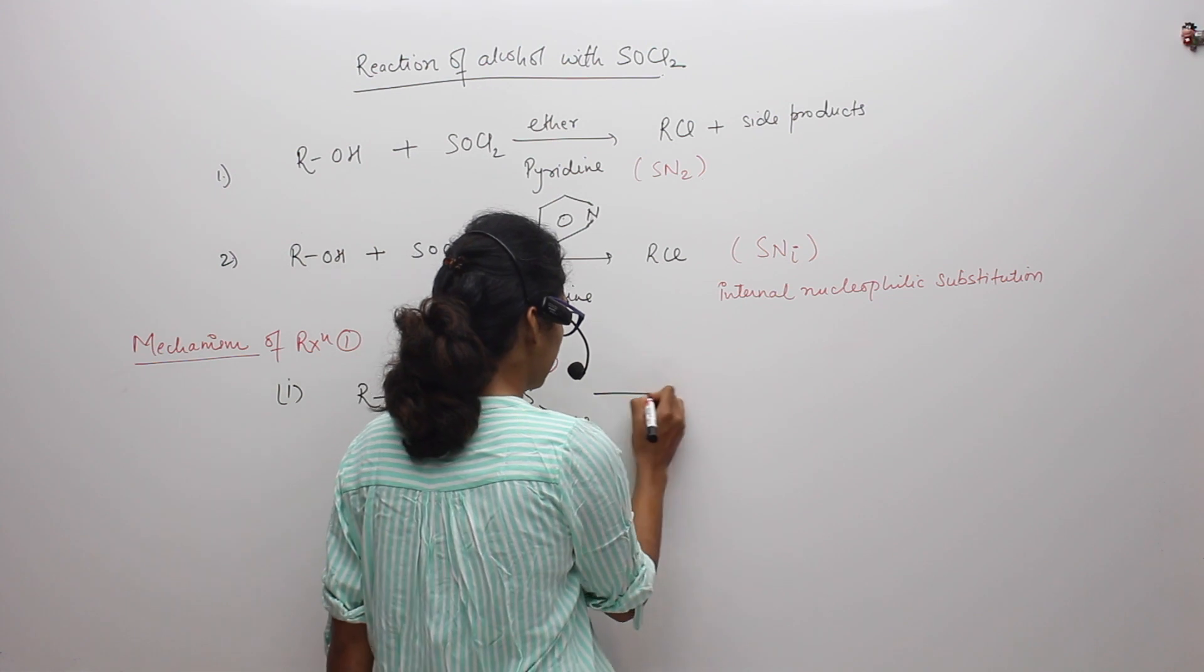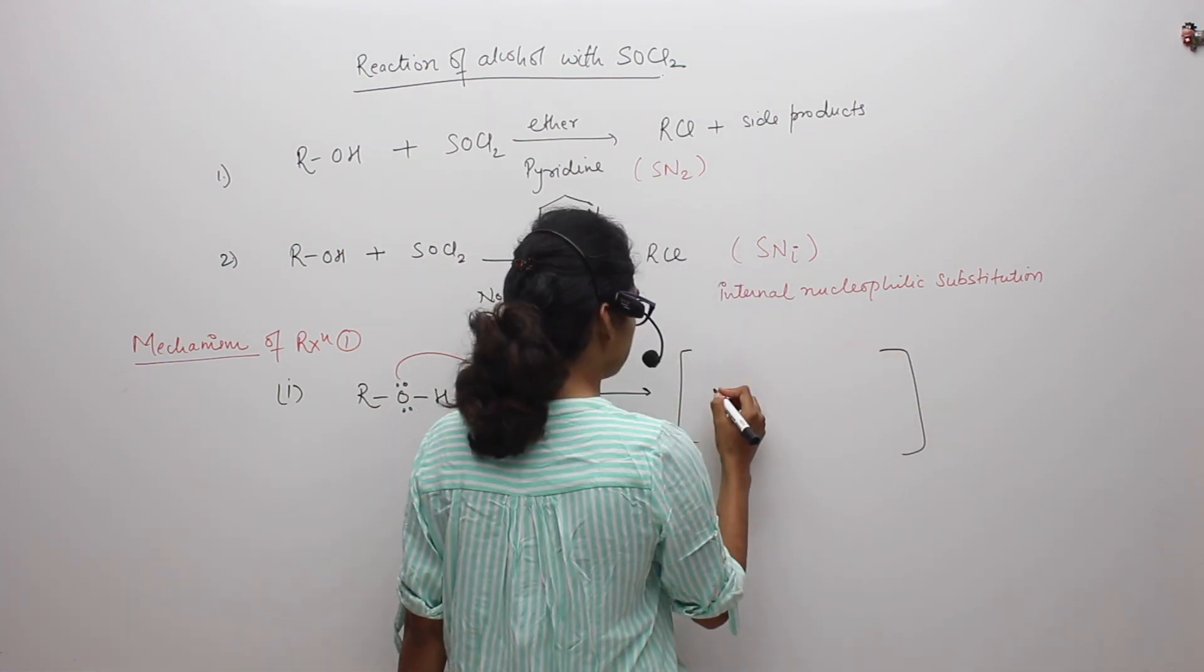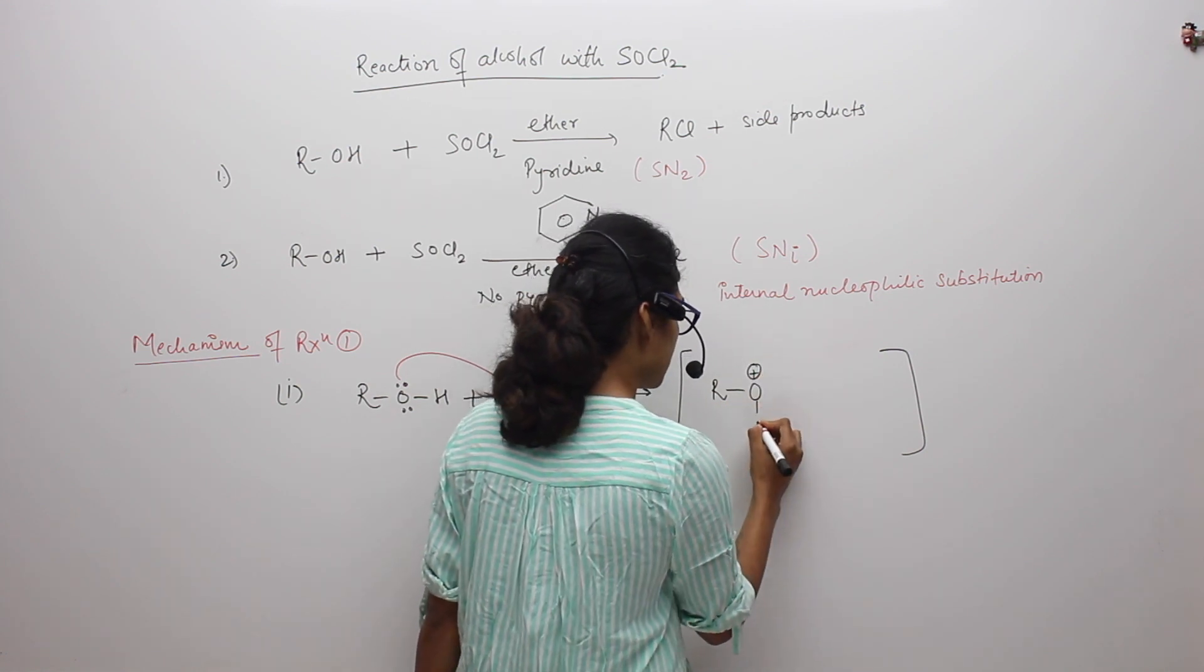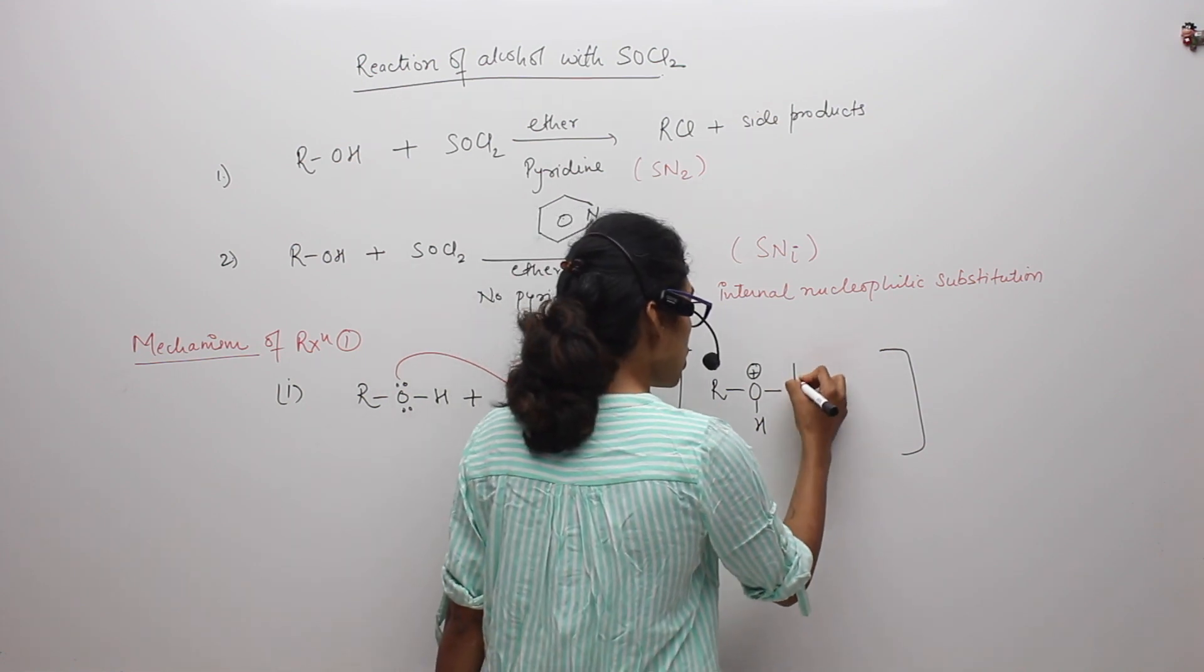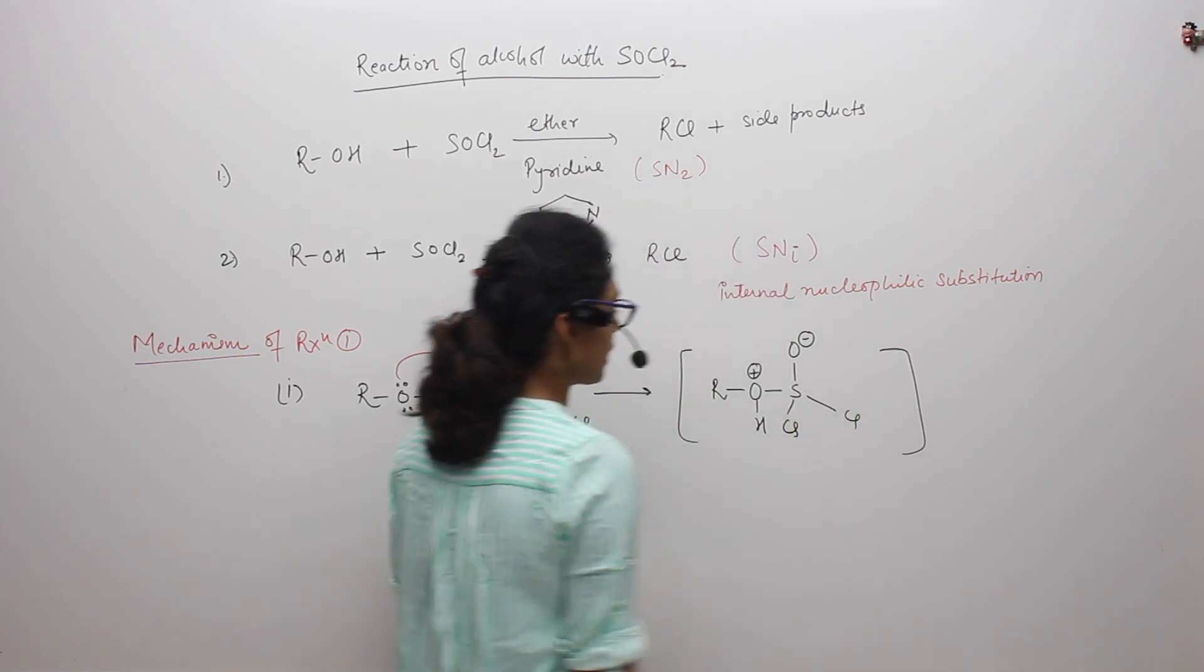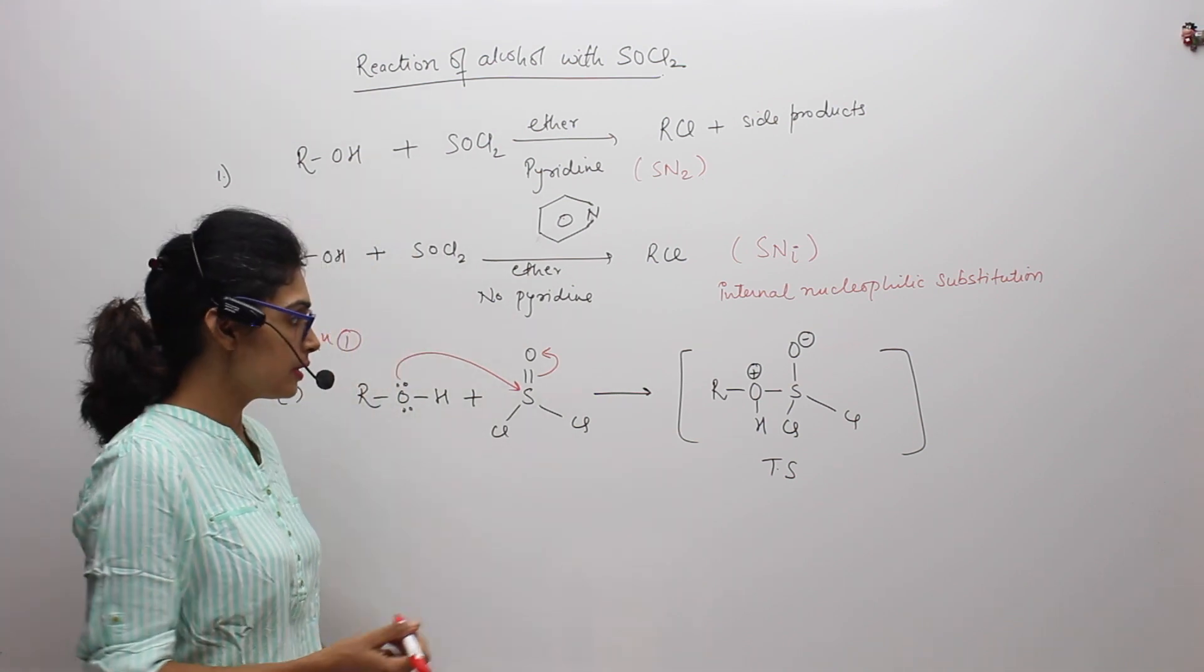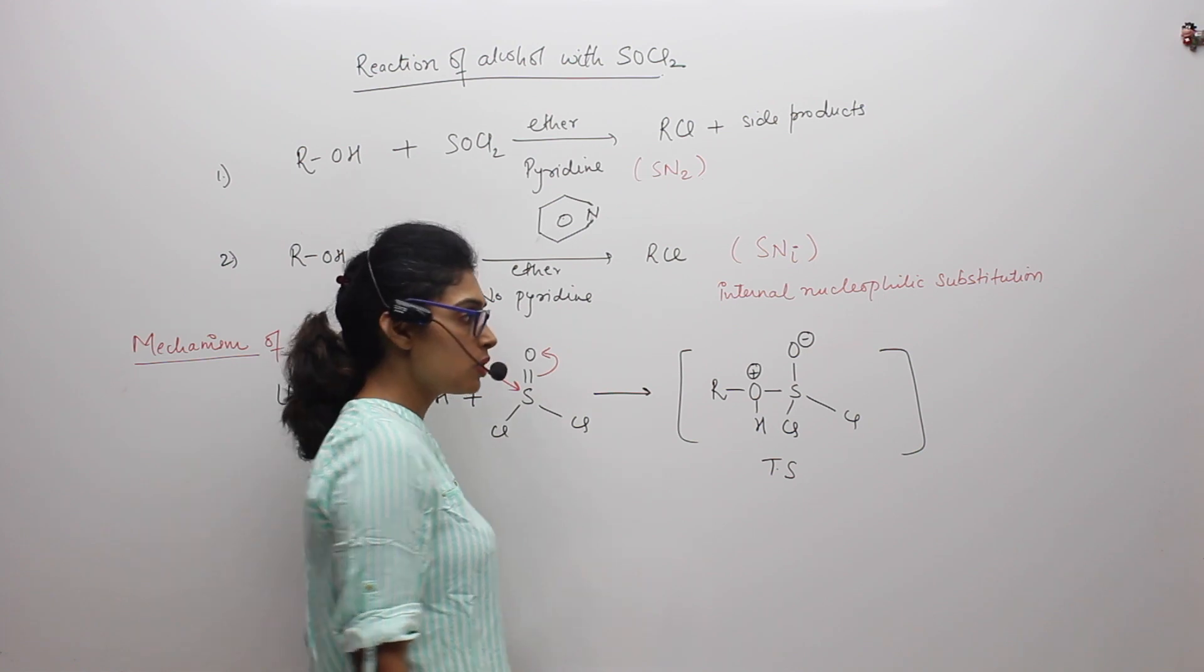In that process, a transition state will form where oxygen will gain a positive charge, oxygen of alcohol. Oxygen of sulfur will gain a negative charge and two chlorines will be attached. So this is a transition state of this reaction. Now what we can see is oxygen of alcohol is gaining a positive charge.